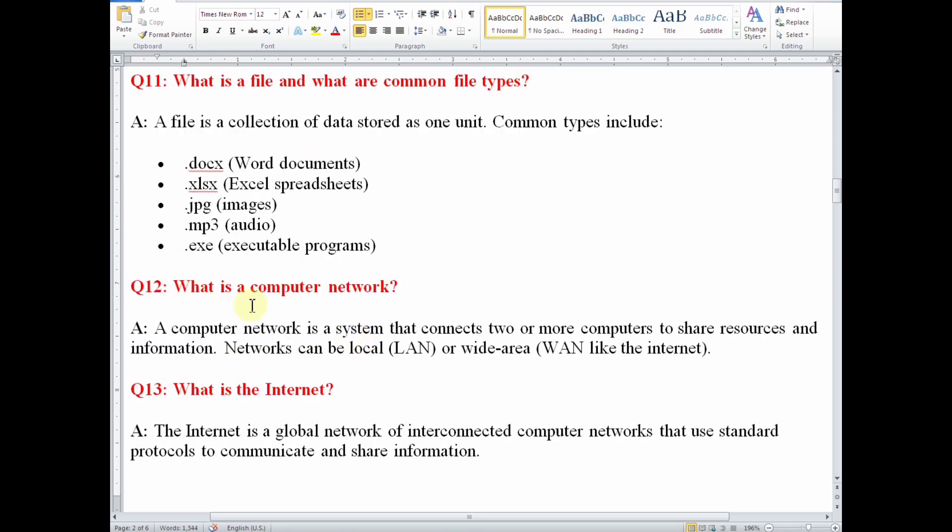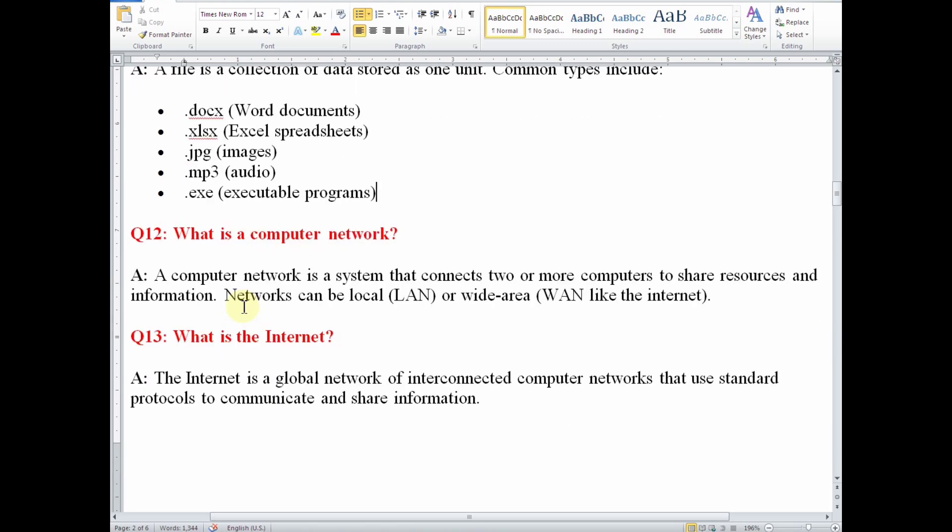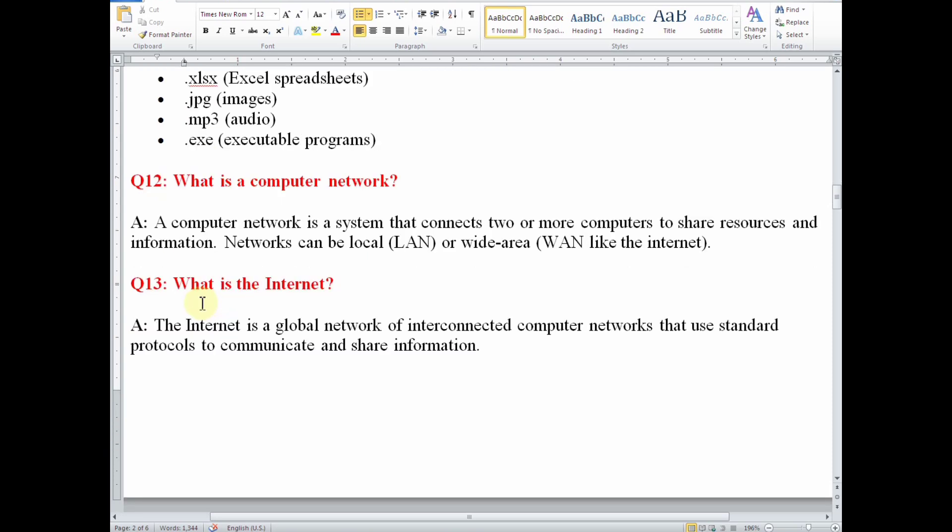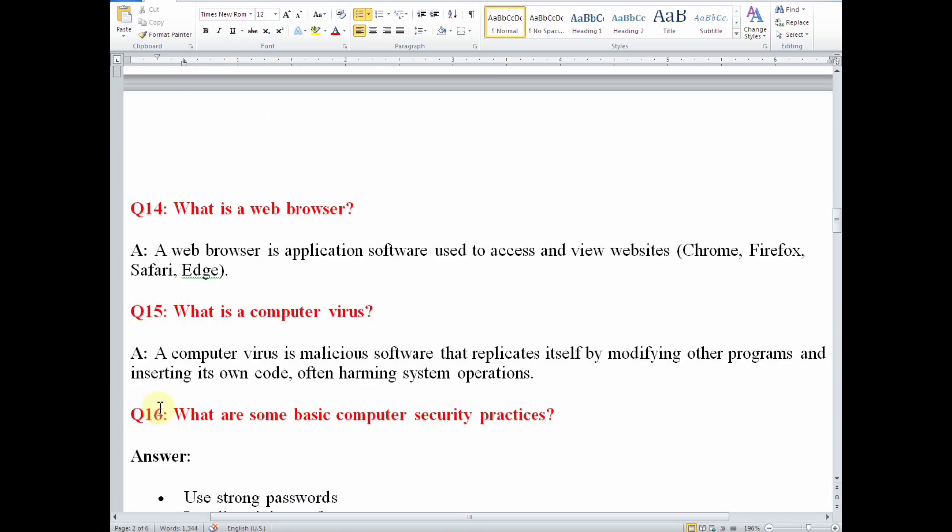Number 12, what is a computer network? A computer network is a system that connects two or more computers to share resources and information. Networks can be local or wide area network. Number 13, what is the internet? The internet is a global network of interconnected computer networks that use standard protocols to communicate and share information. Number 14, what is a web browser? A web browser is application software used to access and view websites, for example Chrome, Firefox, Safari, Edge, etc.